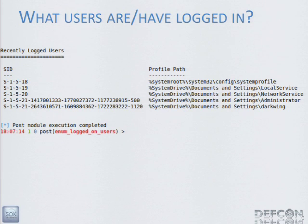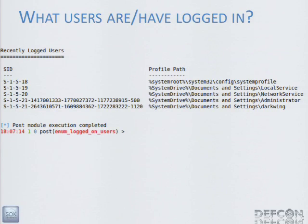This module here is 'enum_logged_on_users.' It gives you the SID and the profile path of all users currently in the credential cache. Because of the way Windows caches credentials, you can look for anybody who not only is logged in right now, but who has logged in recently. From that you can steal cached hashes, but sometimes it's more important just to know that that person has been there. All of that is part of presence.